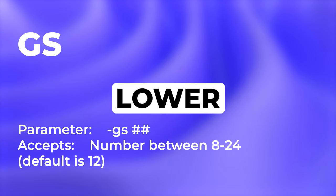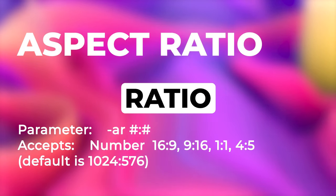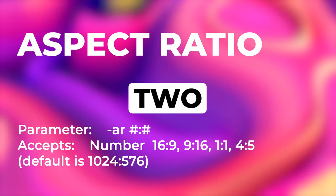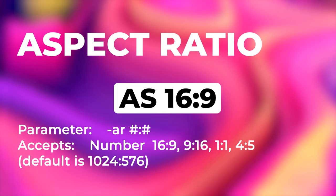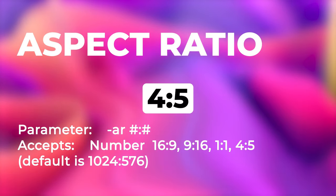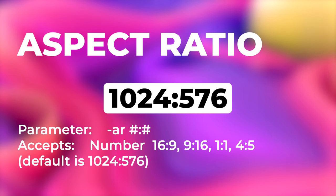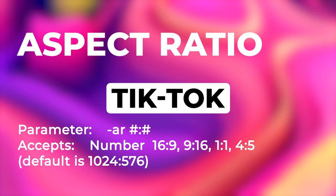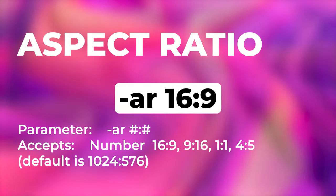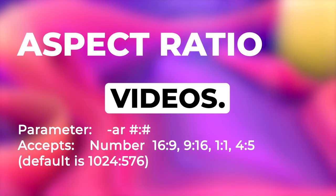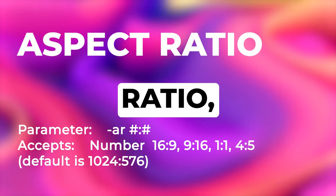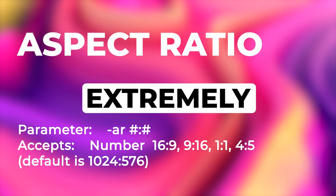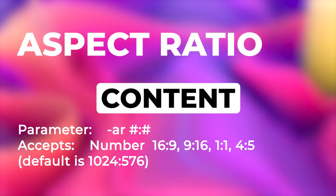Higher GS values lead to more on-topic results while lower values allow more creativity. You can also adjust the aspect ratio using the AR parameter, which sets the width-to-height ratio for video outputs. It accepts two numerical values separated by a colon — such as 16:9, 9:16, 1:1, or 4:5. For example, AR 9:16 is ideal for vertical content on TikTok or Instagram Stories, while AR 16:9 is better suited for widescreen YouTube videos. The AR parameter enables creation of properly framed videos tailored for each platform.